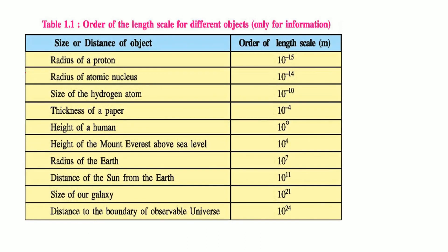This is the order of length scale for different objects. The radius of a proton is 10⁻¹⁵ m; then comes the radius of the atomic nucleus, then the size of a hydrogen atom, then the thickness of paper, the height of a human (10⁰ m), the height of Mount Everest above sea level, the radius of earth, the distance of the sun from earth, the size of our galaxy, and finally the distance to the boundary of the observable universe at 10²⁴ m.